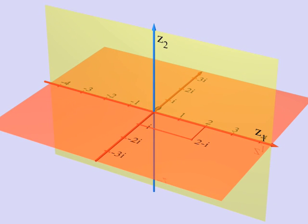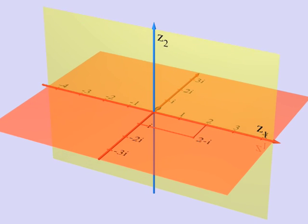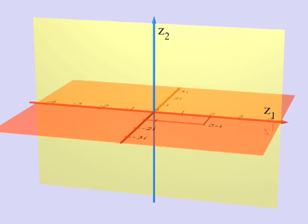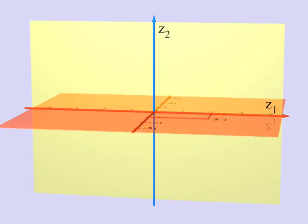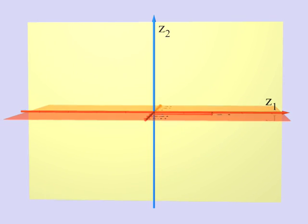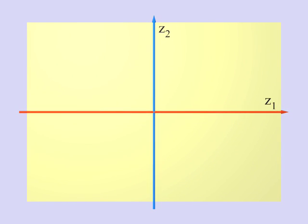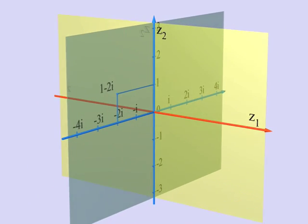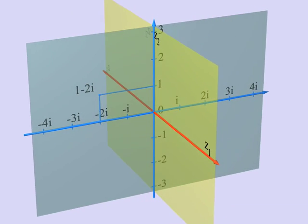For instance, here you see the point 2 minus i on the first axis. The same is true for the other axis, the y-axis. Here, we can see the point 1 minus 2i on this axis.